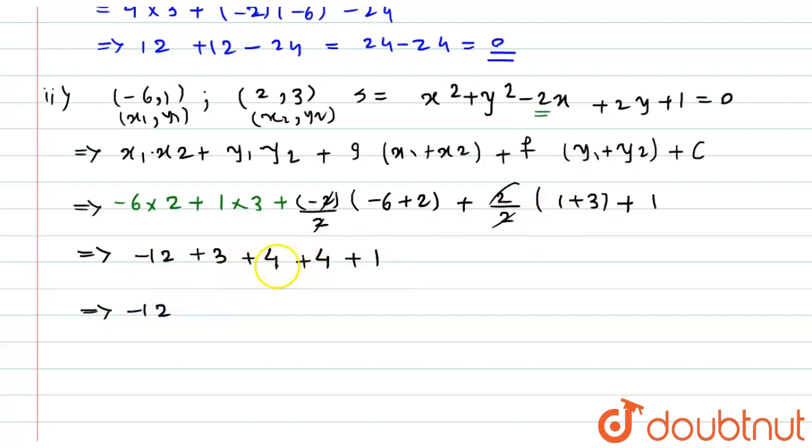Now this equals -12, 4 + 4 is 8, 8 + 1 is 9, 9 + 3 will become +12. Plus 12 minus 12, it will become equals to 0.